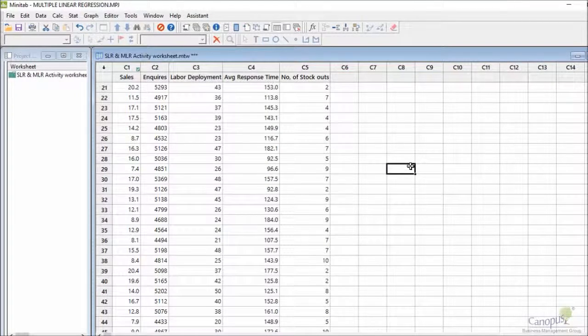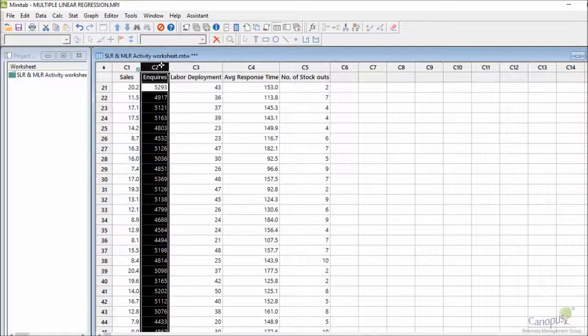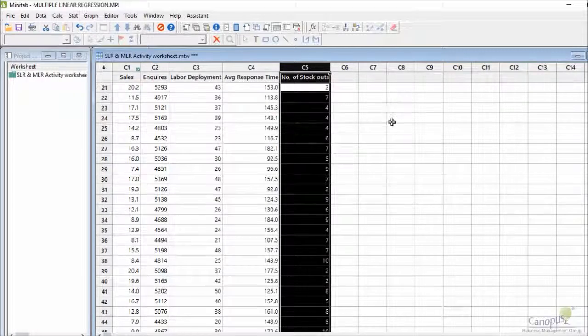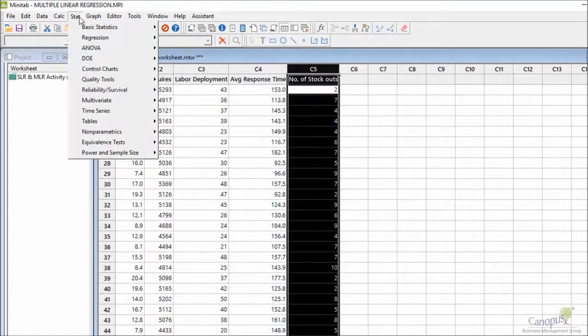So here we are in Minitab and if you recollect we had sales revenue as our Y, enquiry and number of stockouts were two factors which were significant. So now I want to go and build a prediction model.